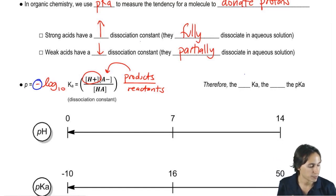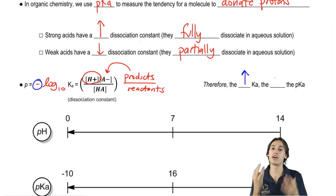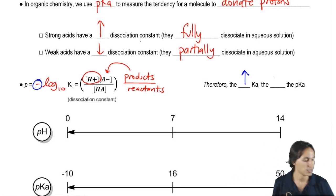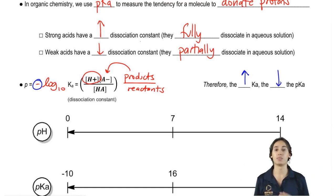That's what I care about. So therefore, if we're taking the negative log of this Ka, what that means is that the higher the Ka, basically the higher the chances of the molecule breaking apart and making ions, the lower the pKa is going to be.